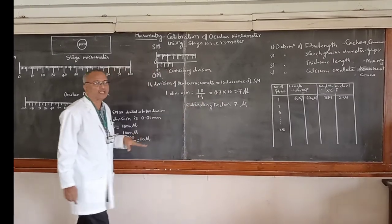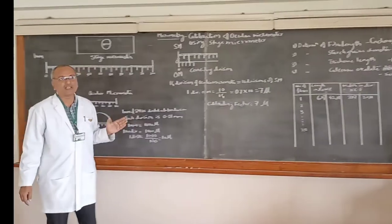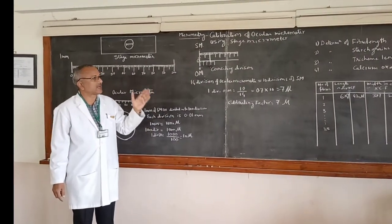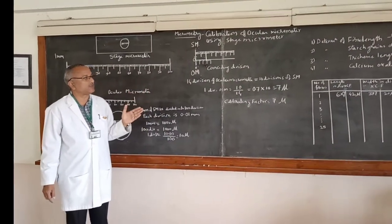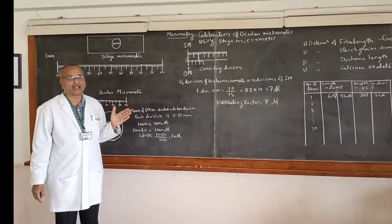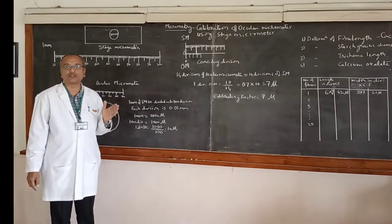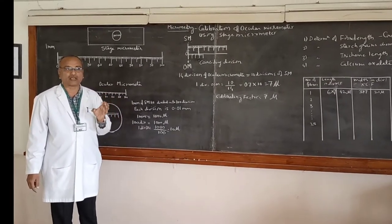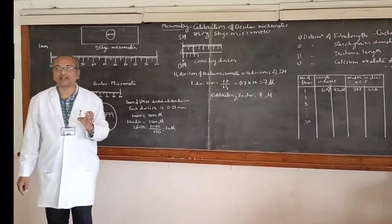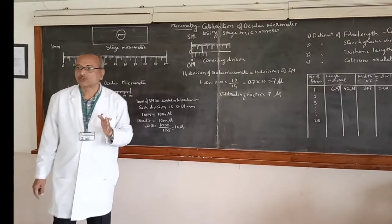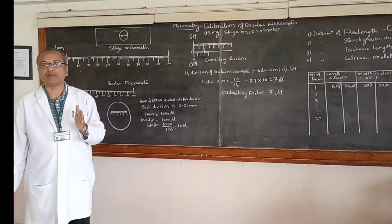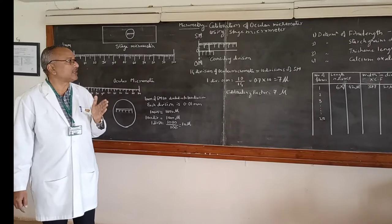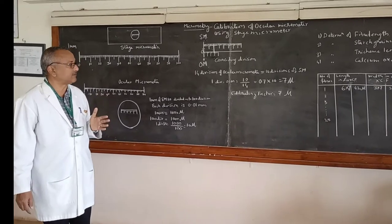These units are used for measuring fiber length, starch length, as well as calcium oxalate or any other cellular contents. All those measurements can be taken using the ocular micrometer with this calibration factor applied.